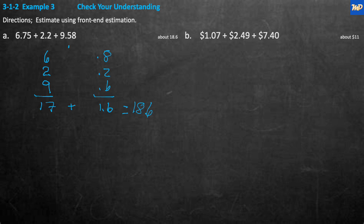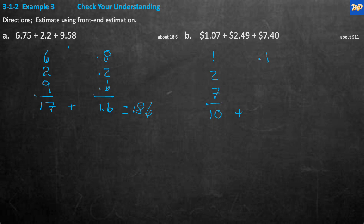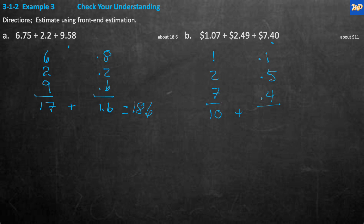For B, the leading digits are 1, 2, and 7, which sum to 10. Taking the tenths: the first rounds up to 0.1 because the hundredths place is greater than 5; the next is 0.4 and rounds up to 0.5 because the hundredths digit is greater than 5; the last is 0.4 and stays 0.4 because the hundredths digit is less than 5. Adding the tenths: 0.1 + 0.5 + 0.4 = 1.0. So 10 + 1 = 11.